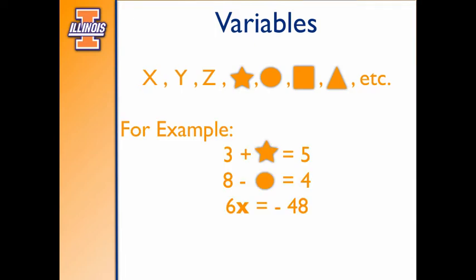Now let's take a look and see how these work. Let's say we have something like 3 plus star is equal to 5. We need something to take the place of star that's gonna make this number sentence work. Now all you guys have probably seen that that value is 2. If star is 2 then this number sentence works.